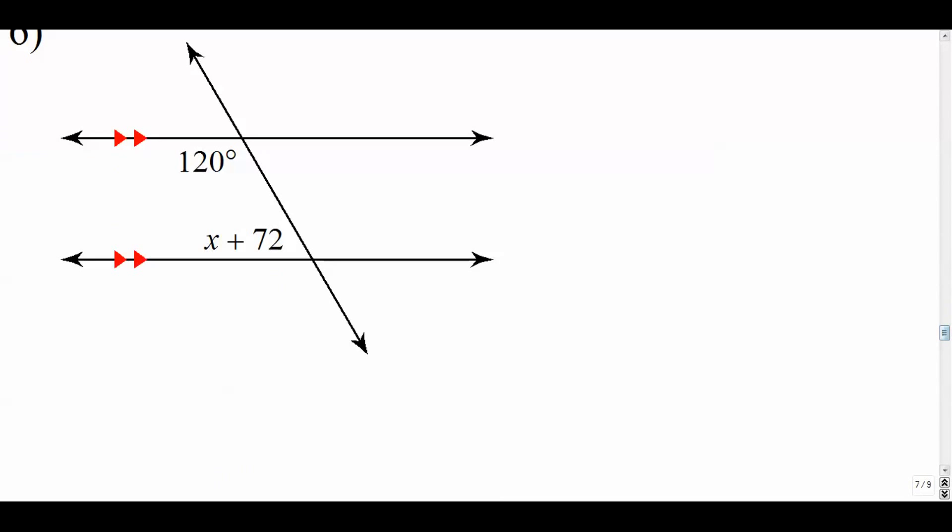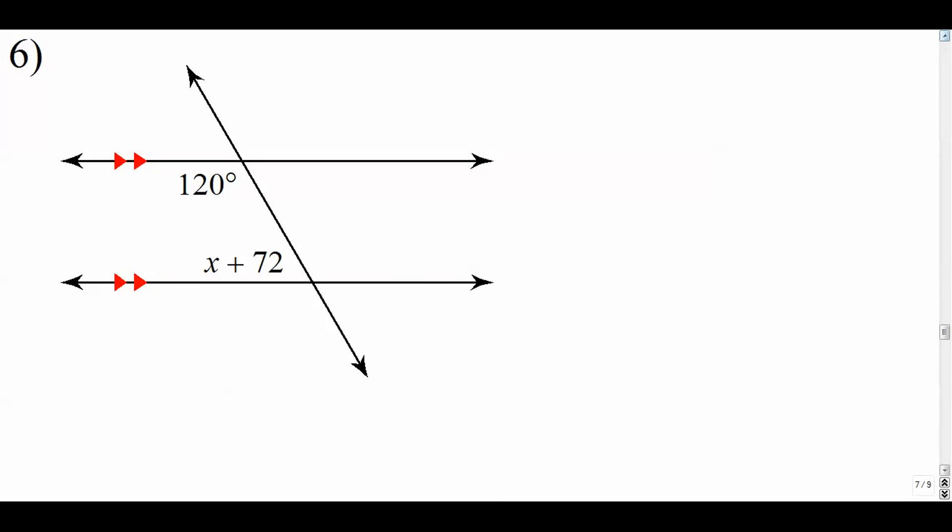Moving along. Number six. Number six, we have two angles that are interior. They are on the same side of our transversal. So hopefully you're getting really good at these. These are consecutive interior angles. Consecutive interior angles are supplementary, meaning they add up to 180. So we say x plus 72 plus 120. They're not the same, but they add up to 180. Be careful with that.